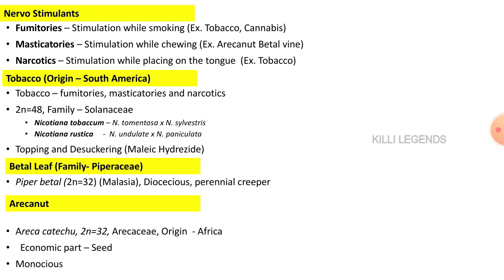The first narcotic crop is tobacco. Tobacco is used in all three categories: fumetories, masticatories, and narcotics. Its center of origin is South America, with chromosome number 2n equal to 48. There are two types of cultivated tobacco: Nicotiana tabacum, whose parents are Nicotiana tomentosa and Nicotiana sylvestris through natural chromosome doubling, and Nicotiana rustica, whose parents are Nicotiana undulata and Nicotiana paniculata. Two important agronomic practices in tobacco cultivation are topping and desuckering, which promote vegetative growth by removing the flowering organ and suckers.